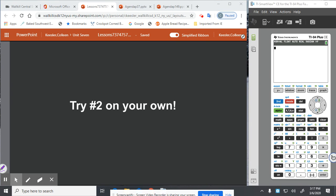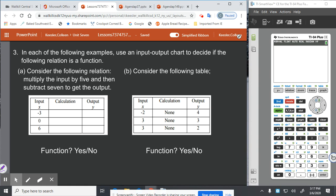You're going to try number two all on your own. Number three. In each of the following examples, use an input-output chart to decide if the following relation is a function. So for A, consider the following relationship. Multiply the input by five and then subtract seven to get the output.